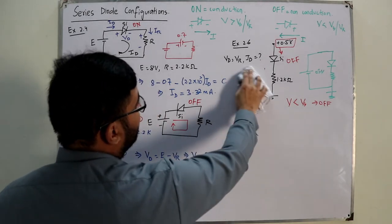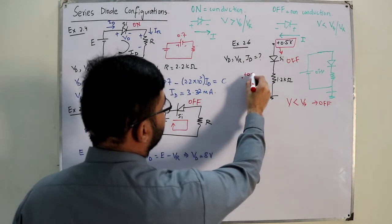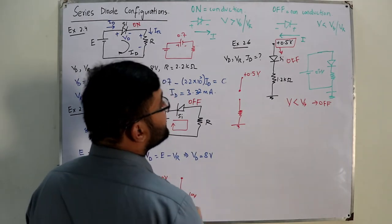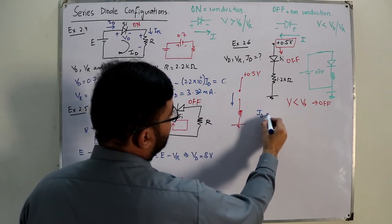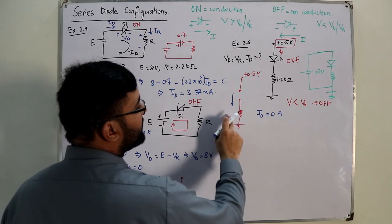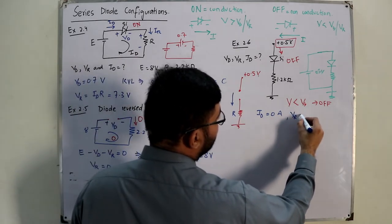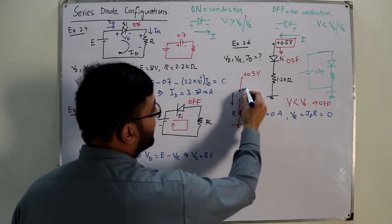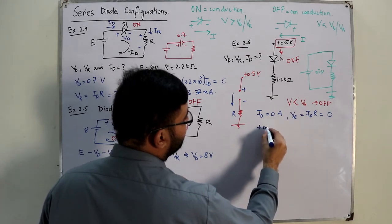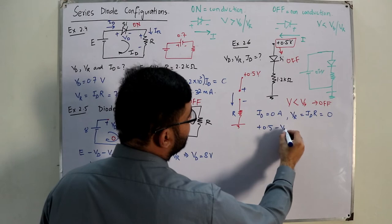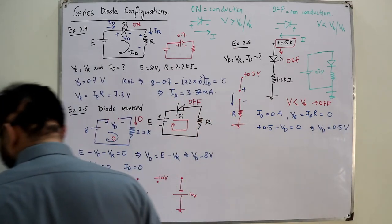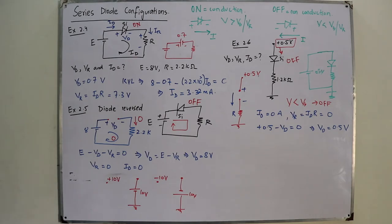Since the diode is off, replace it with an open circuit. With an open circuit in the loop, ID = 0 amperes. Therefore VR = ID × R = 0 volts. Applying KVL: 0.5 − VD − 0 = 0, so VD = 0.5 volts. Final answers: ID = 0 A, VR = 0 V, VD = 0.5 V.